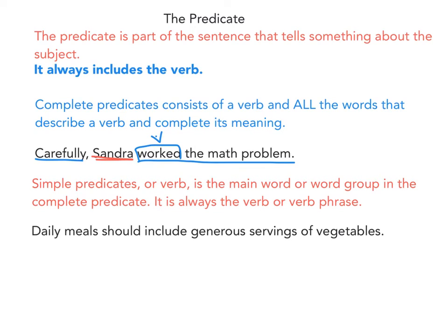'Daily meals should include generous servings of vegetables.' I ask myself: what should include generous servings of vegetables? That would be 'daily meals.' The rest is the complete predicate: 'should include generous servings of vegetables.' I know 'include' is the verb, but 'should' is a helping verb, so my complete verb phrase is 'should include.' This would be your simple predicate or verb phrase.